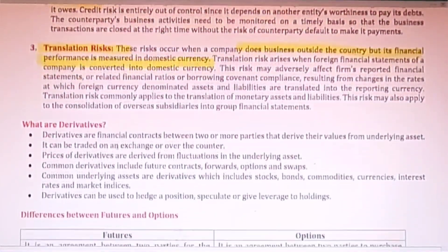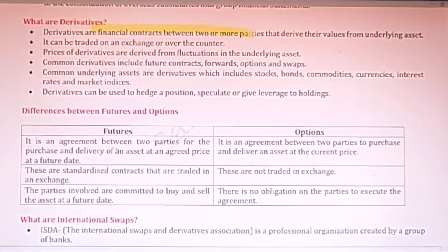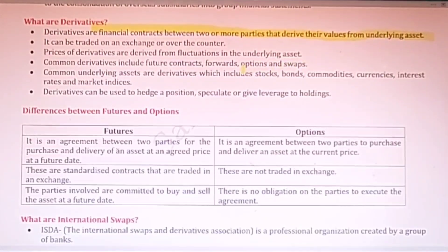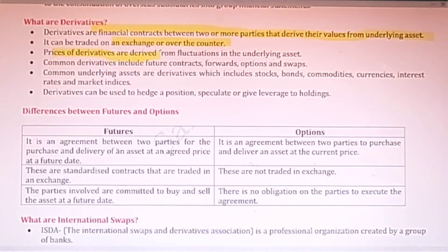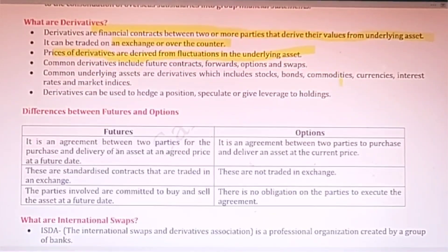The next topic is derivatives. These are basically financial contracts between two or more parties that derive their value from an underlying asset. They are traded on an exchange or over the counter, and prices of derivatives are derived from fluctuations in the prices of the concerned asset. They can be of different types: future contracts, forwards, options, and swaps.